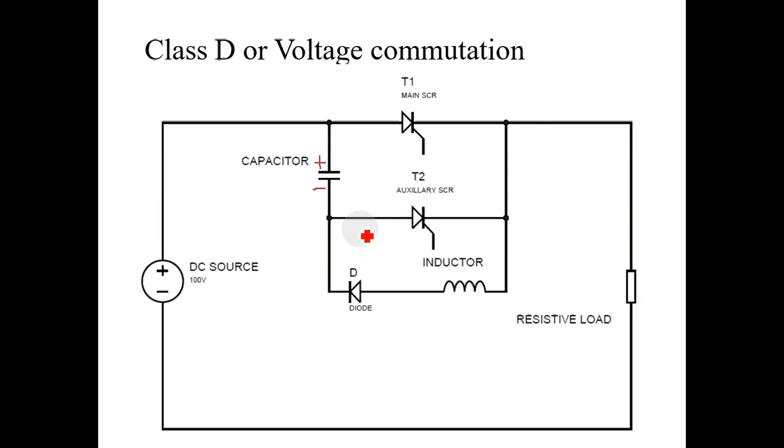Now, at the same time, capacitor will initially charge with upper plate positive and lower plate negative. And capacitor will get closed path to discharge.